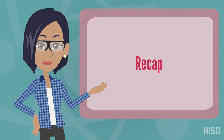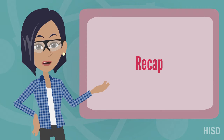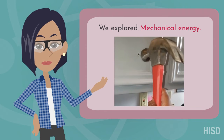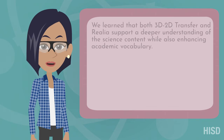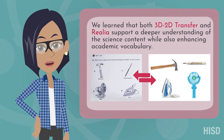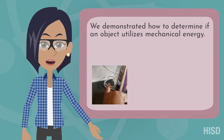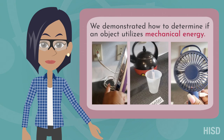Here's a quick recap of what we just covered. We explored mechanical energy. We learned that both 3D to 2D transfer and realia support a deeper understanding of the science content while also enhancing academic vocabulary. We demonstrated how to determine if an object utilizes mechanical energy.